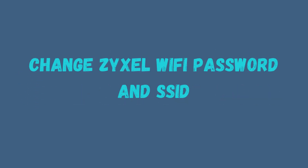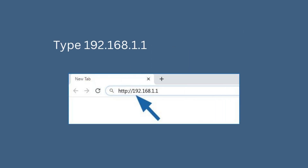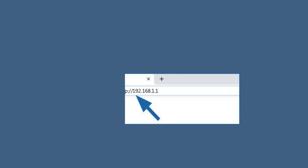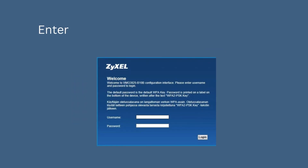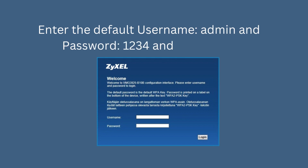Change ZyCell Wi-Fi password and SSID. Open a web browser of your choice, type 192.168.1.1 in the address bar, enter the default username: admin, and password: 1234, and click login.